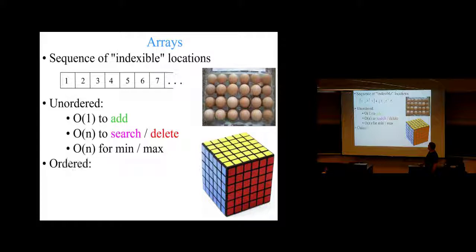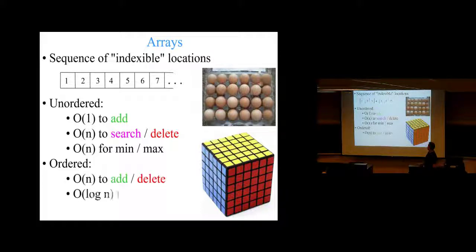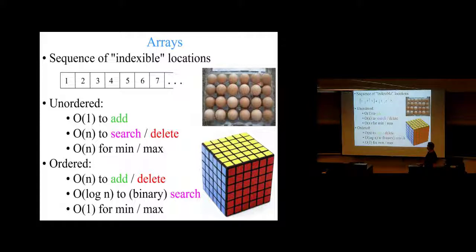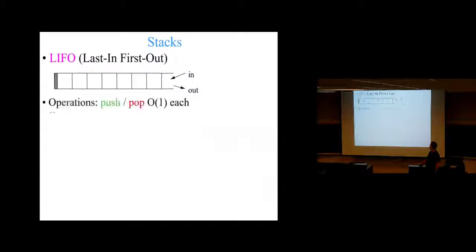We talked about arrays — long time to add because you've got to move everything down, but quick if it's ordered, so you can do binary searches and find what you're looking for in log N time. But other things take longer. So sort of quick adds when unsorted, but it takes a lot of time to add to a sorted array.